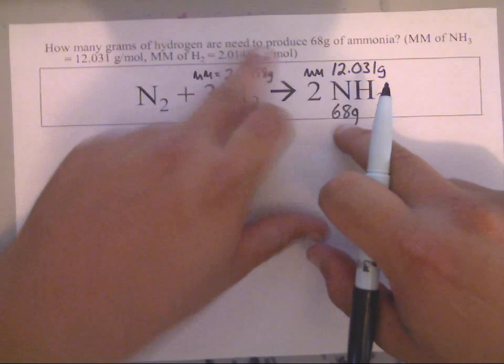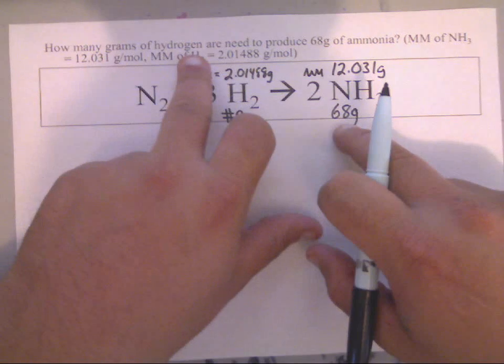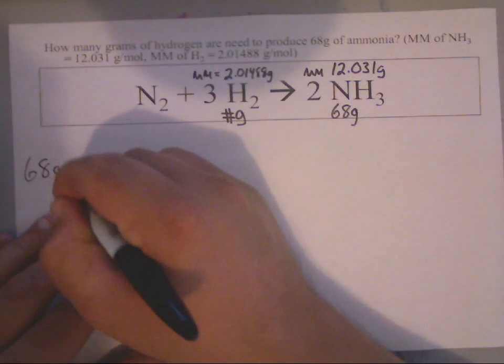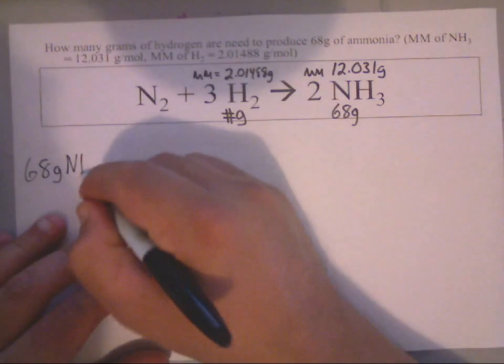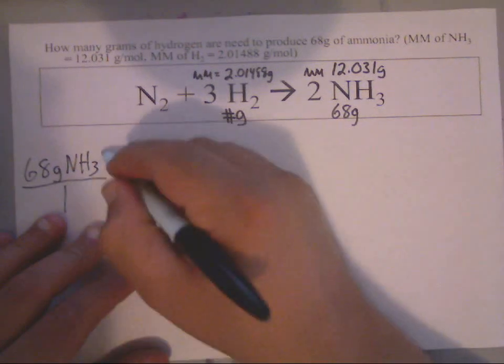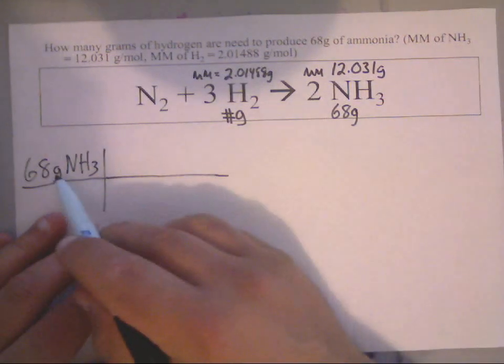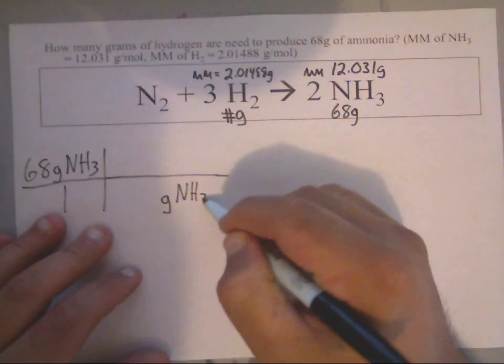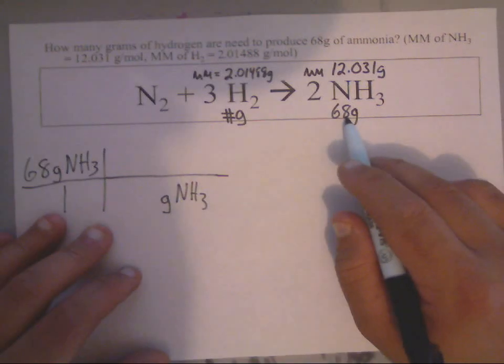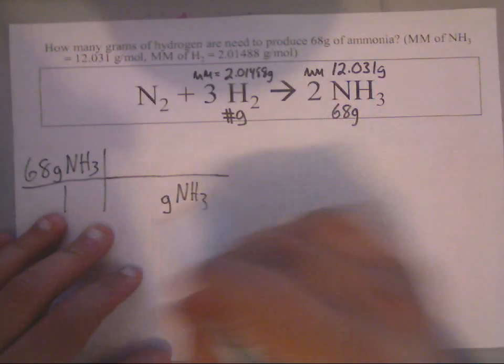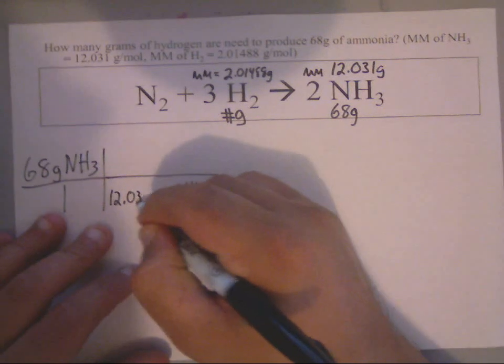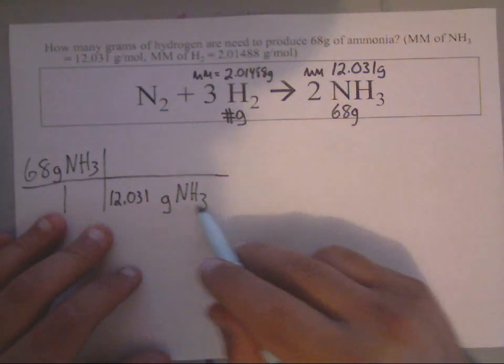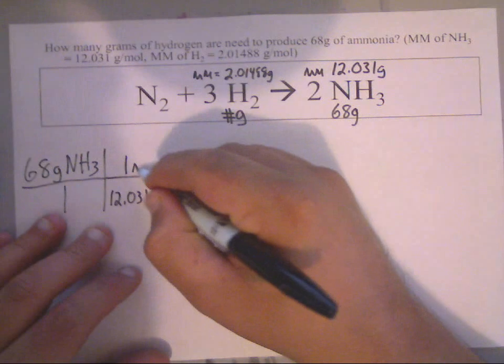So I'm going to start by writing 68 grams of NH3 down and putting it over 1. Now watch this: just like all the other problems, if this is grams of NH3, grams of NH3 will go down here. Now what is grams of NH3? Well, here is where we would write the molar mass. Molar mass of NH3 is 12.031 grams NH3, which that is known as the molar mass of ammonia, so therefore I'm going to write one mole of NH3 up here.